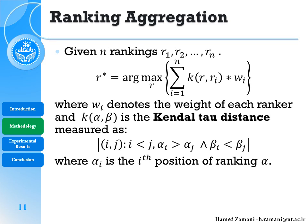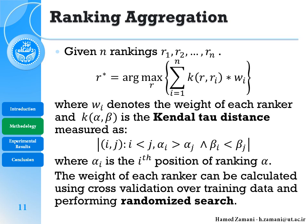For the ranking aggregation, we assume we have N different rankings and the final ranking is the one which has the minimum Kendall tau distance with all the base rankings. Each ranking has a weight w_i, and we perform cross-validation over the training data and use randomized search to find these weights for each of the rankings.